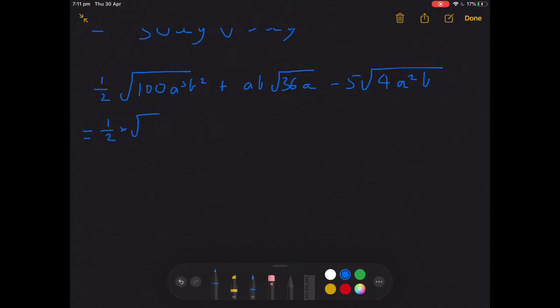We should be splitting up the roots as much as possible. So let's split it all up. Half times root 100, that's going to be easy, times root a cubed times root b squared. Let's just work this through first and see how simple we can get it, and then let's do this second term and this third term separately.